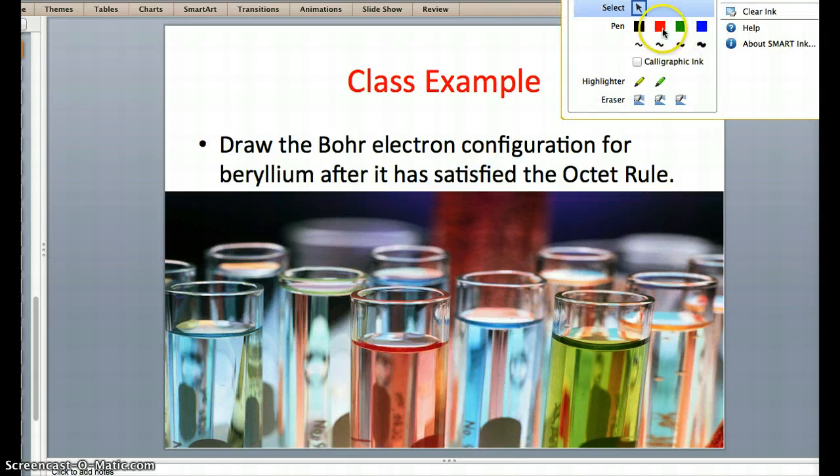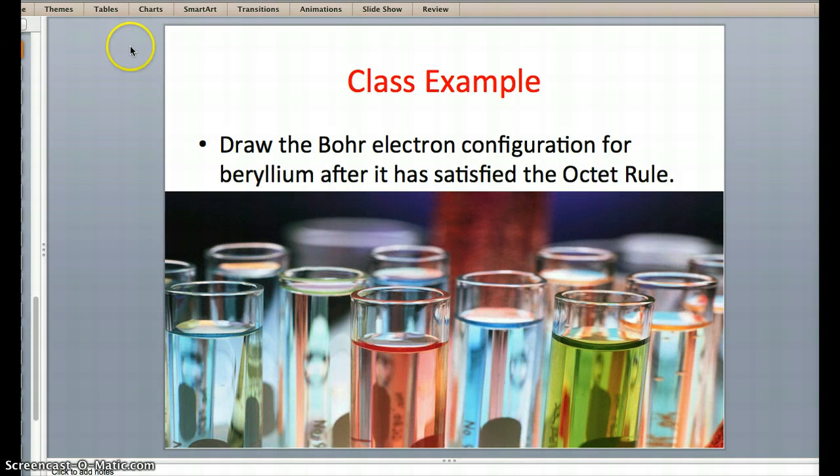Given that beryllium has an atomic number of 4, we know one important thing about it. It has 4 protons and therefore its neutral atom has 4 electrons.